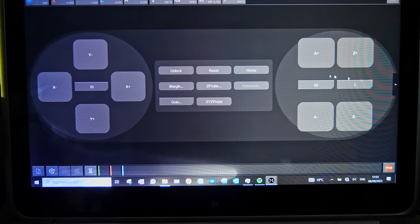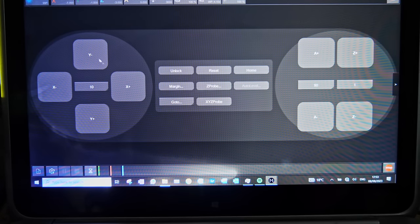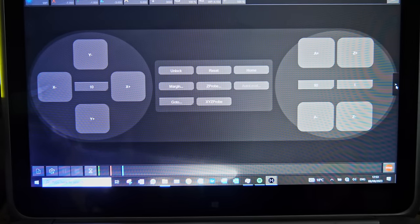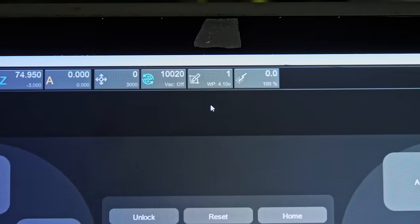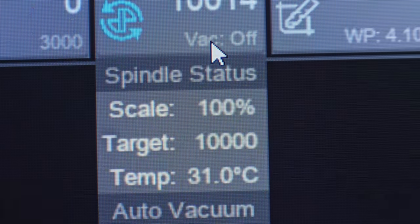It allows you to preview the G-code really nicely, you can jog the machine around, you can customize settings on the machine. Overall, it does everything that you need it to do, and I like how it displays a lot of information about the machine as you're cutting.